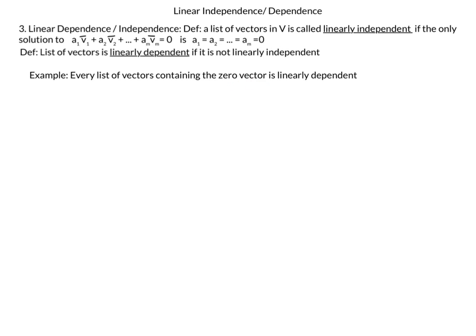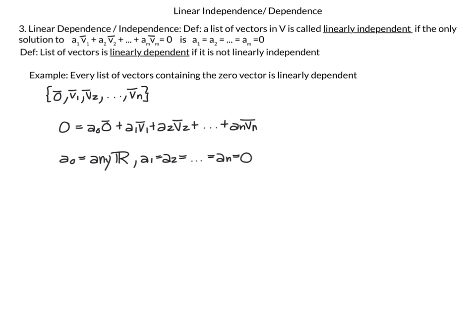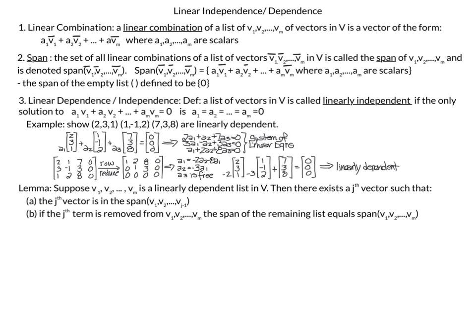Every list of vectors containing the zero vector is linearly dependent. Consider the list (0, v1, v2, ..., vn): the homogeneous equation is a₀·0 + a1·v1 + ... + an·vn = 0. Because a₀ is multiplied by the zero vector, a₀ can be any real (or complex) number while a1 = a2 = ... = an = 0. So there is always a non-trivial solution, and therefore any list containing the zero vector is linearly dependent.